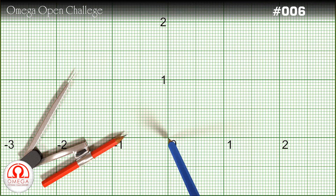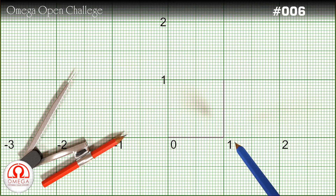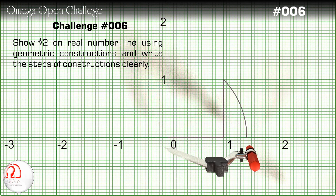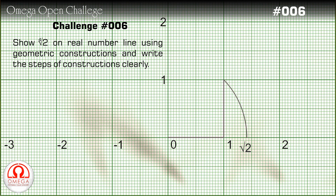Welcome to Omega Open Challenge. You must remember how we used to show a square root of 2 on the real number line using geometric constructions. The challenge this week is to show 2 to the power 1 by 4, i.e. the 4th root of 2, on the real number line using geometric constructions. You have to show 2 to the power 1 by 4 on the real number line and also write the steps of construction clearly.